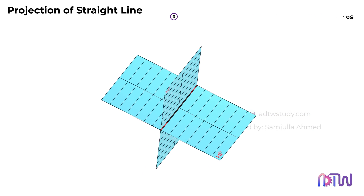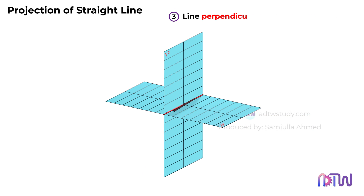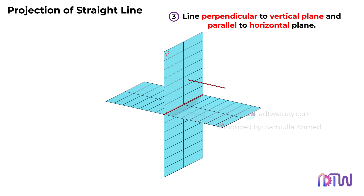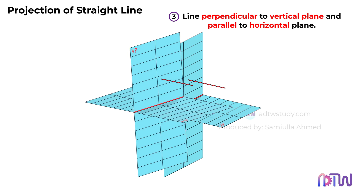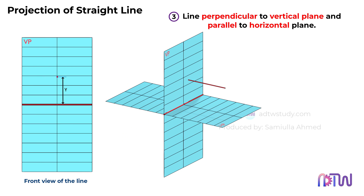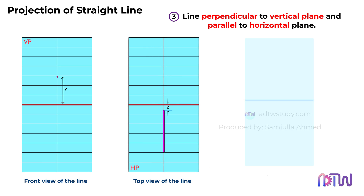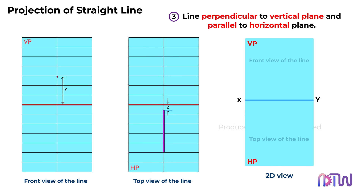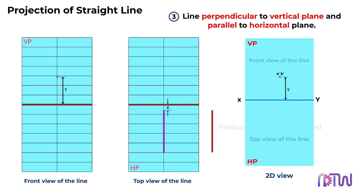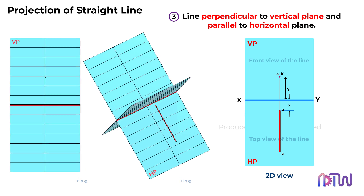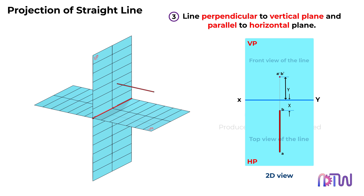Moving on to Position 3: the line can be perpendicular to the vertical plane and parallel to the horizontal plane. When we observe the front view, the line appears as a dot. From the top view, it takes on the appearance of a straight line. In the 2D view, the front view manifests as a dot positioned at a distance above the XY line, while the top view materializes as a vertical line below at an X distance — due to the line being at a certain distance above and in front of both planes.